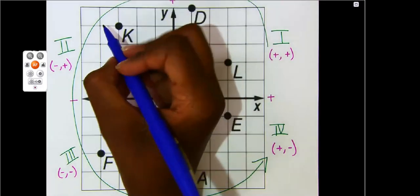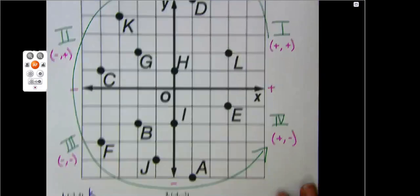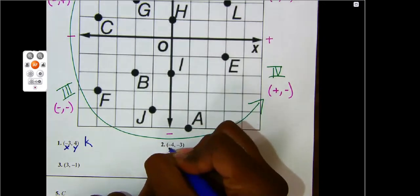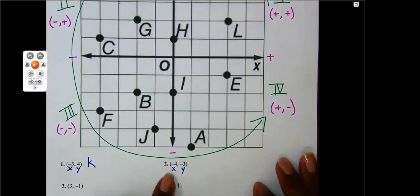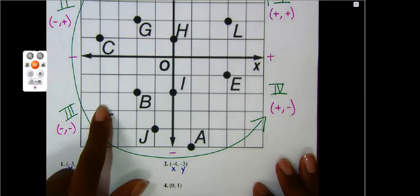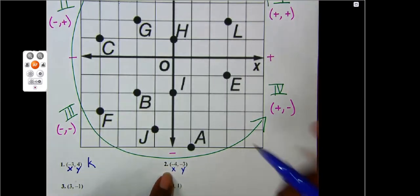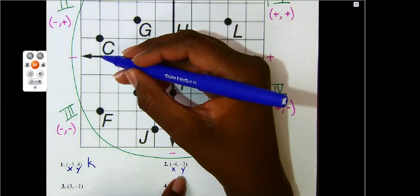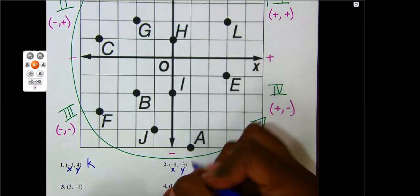Notice that by identifying which quadrant I should be in, I knew I should find one of those letters as my answer. Number two — the characteristics of my x and y say they're both negative: a negative four and a negative three. Which quadrant has x and y as negative? Good job — quadrant three. So starting with x, negative four, I go to the left: one, two, three, four. Then negative three for my y, so I go down: one, two, three. The letter I arrive at is F.